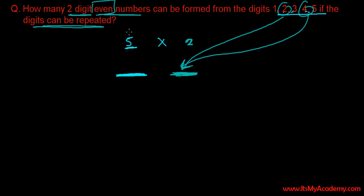And as repetition is allowed, so if the letter we choose here is repeated here also, no problem because repetition is allowed. So the first position can be filled with 5 different letters but the second position can be filled only with either 2 or 4 because we need an even number and that should be 2 digit.